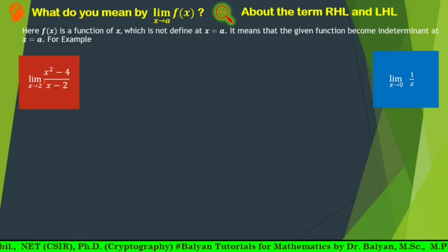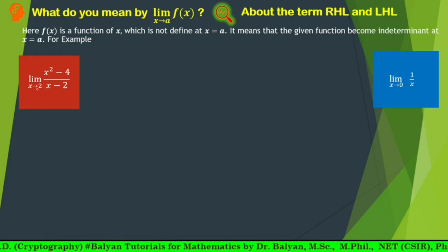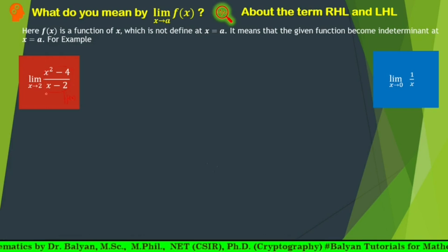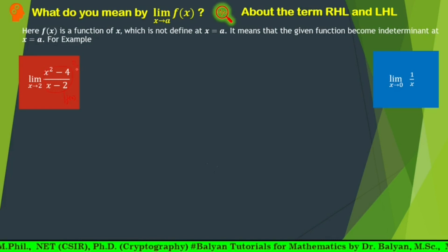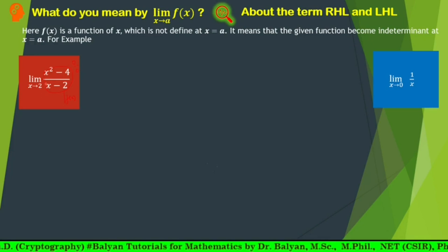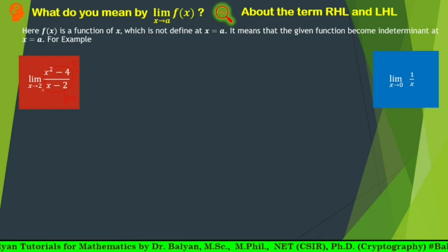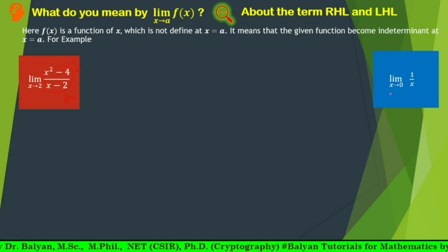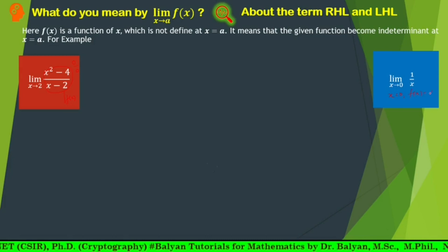Taking this example, here x tends to 2 and this is your function. When we put x equal to 2 here, this becomes 0 upon 0. It means when x equal to 2, we cannot find this value. At any other point which is not x equal to 2, we can get the value directly. Similarly, in this case, when x equal to 0, f(x) becomes infinity.